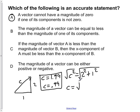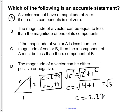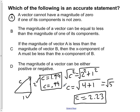We get c equal to the square root of 2 squared, which is 4, plus 1 squared, which is 1, giving the square root of 5. The square root of 5 is equal to 2.23. So c is not equal to or less than either component — c equals 2.23, which is greater than both the y component and the x component. Therefore B is not accurate; B is false.